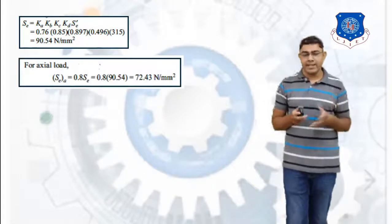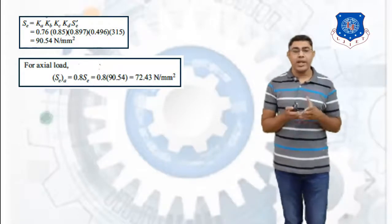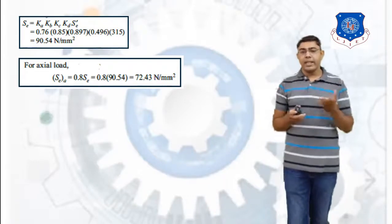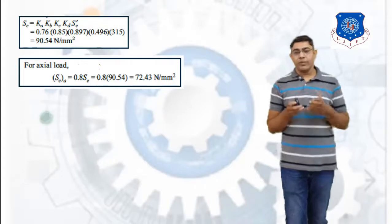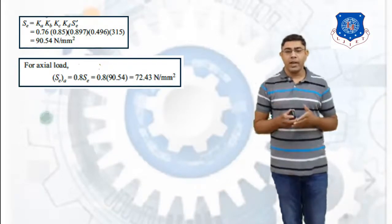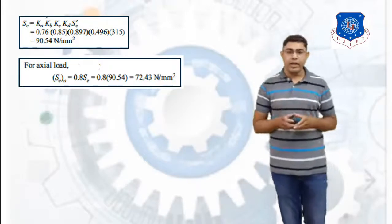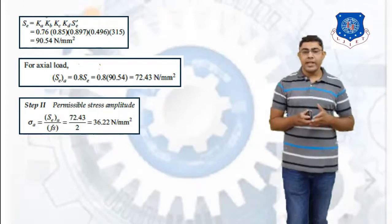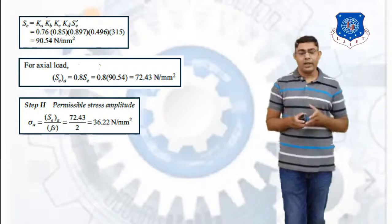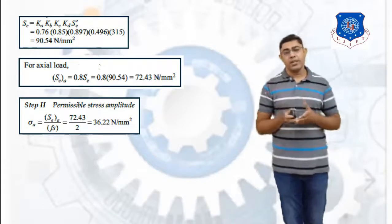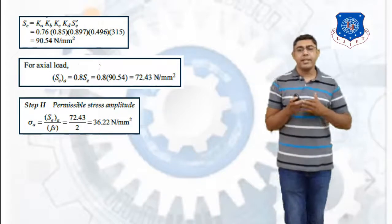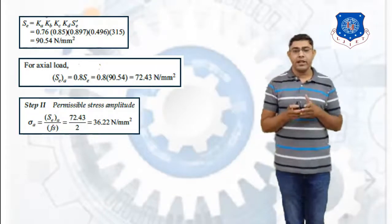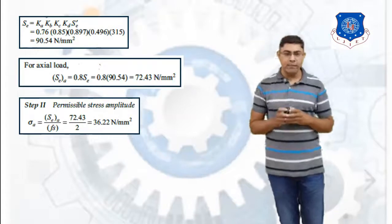Since an axial load is applied, we apply the axial load correction: Sea = 0.8 × Se = 0.8 × 90.54 = 72.43 N/mm². The permissible stress amplitude is then: σA = Sea / factor of safety = 72.43 / 2 = 36.22 N/mm².